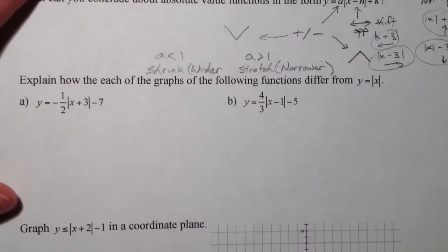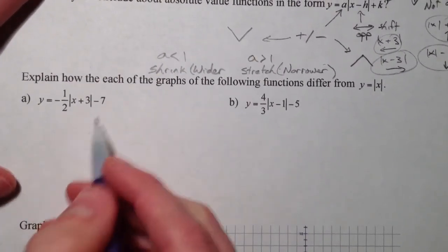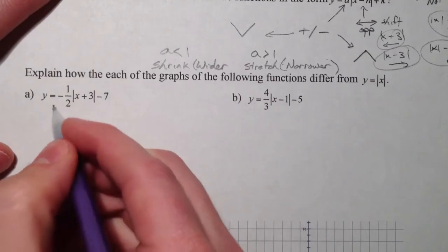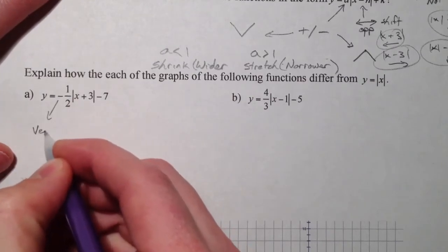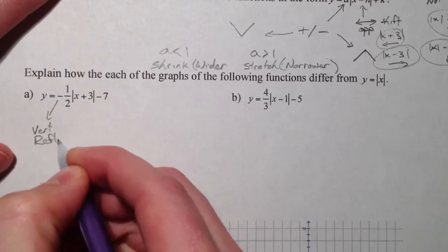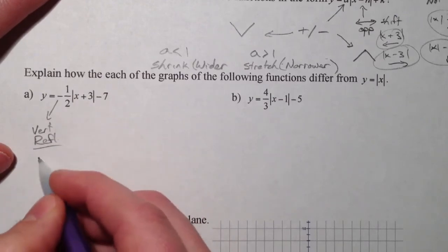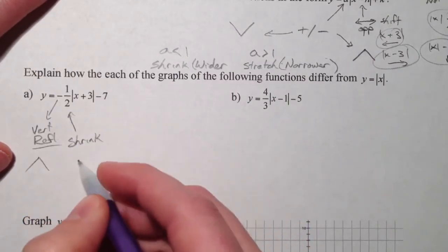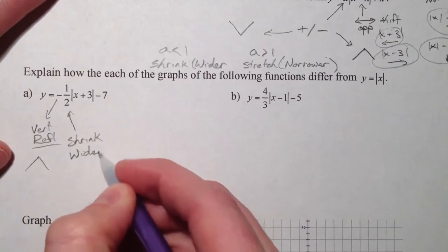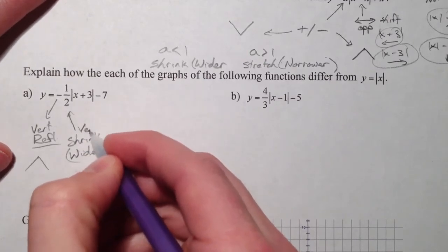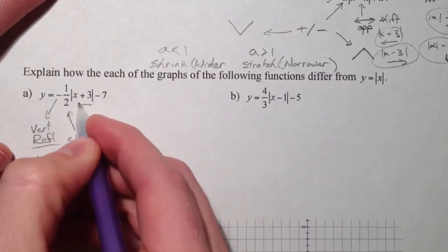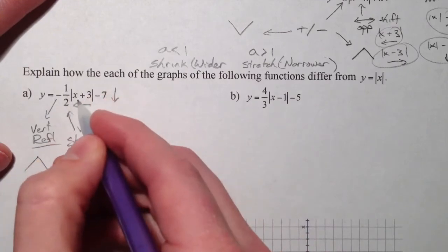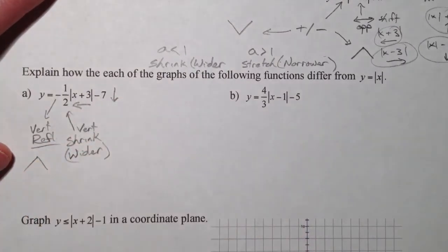So, explain how each of the graphs differ from the original. Try these by yourself. See if you can figure it out. Truly try it. So, vertical reflection might be just as easy to say, oh, it opens down now. It's a shrink, wider. It's a vertical shrink. This plus 3 moves it to the left 3, and the minus 7 moves it down 7. Because this is opposite. My brain thinks right, but it actually moves left. Minus 7 moves it down 7.